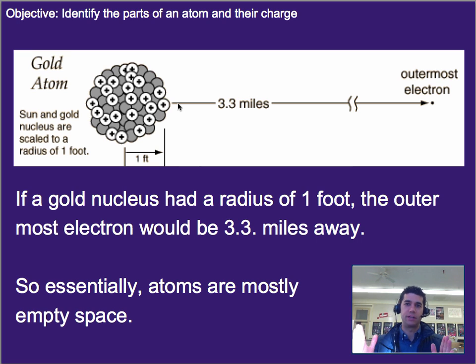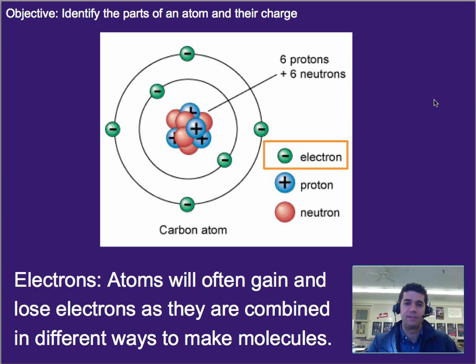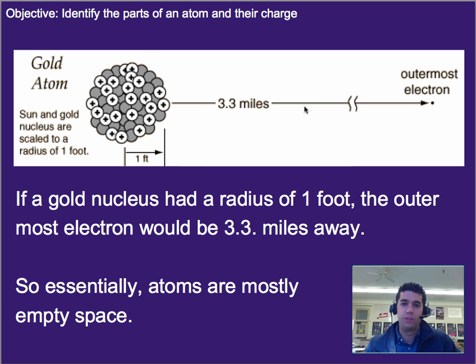So about this big, if you're looking at the video of me right now. Then that means the outermost electron, so if we look at this model right here, think there are different orbits. So the outermost electron would be 3.3 miles away. So what that means is that an atom is essentially a really tiny speck, that is the nucleus at the center, and an even tinier, tinier, tinier speck, that is the electrons that are orbiting around the nucleus. And they are tremendously far away. So if the nucleus is one foot in radius, the outermost electron is 3.3 miles away. So essentially that means atoms are mostly empty space.